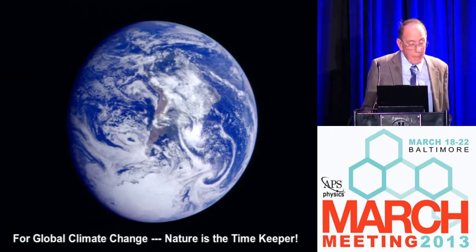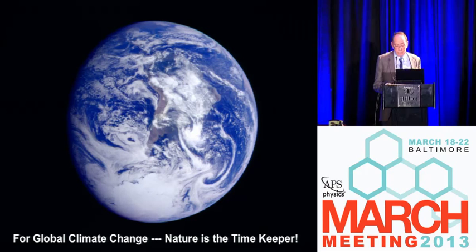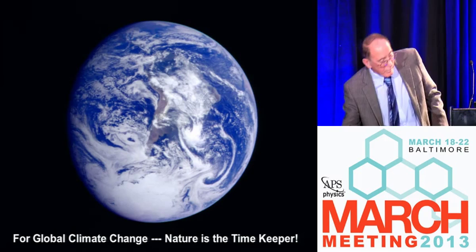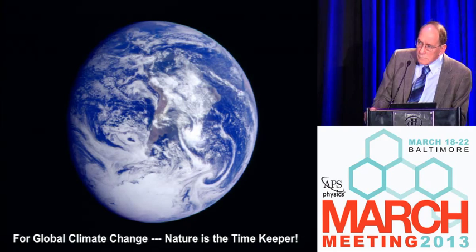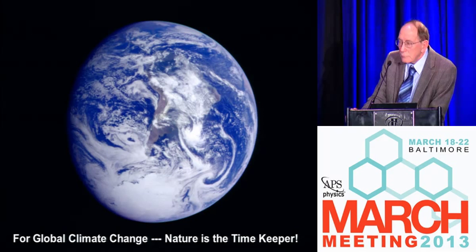We have time for a couple of questions. I sort of saw some of this in your graph, but maybe you could say a few words on where we are now versus the 100,000-year ice age cycles, and what kind of temperature range that was versus what we've seen so far in human-made change.